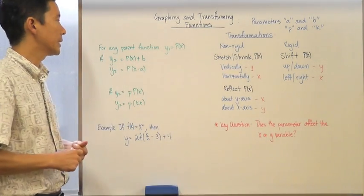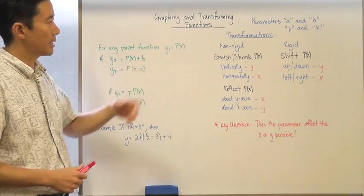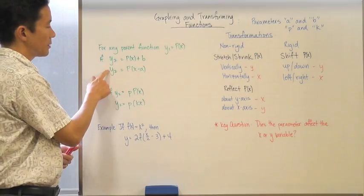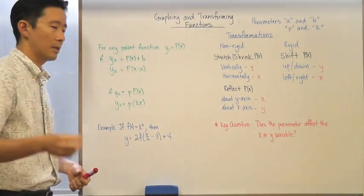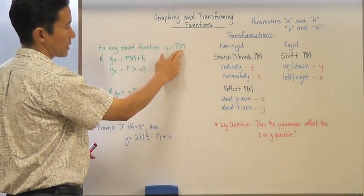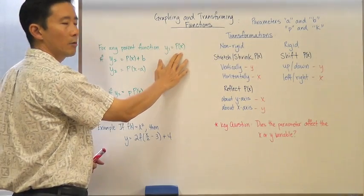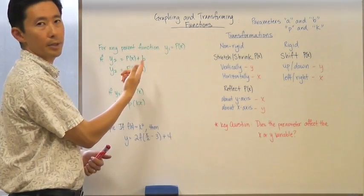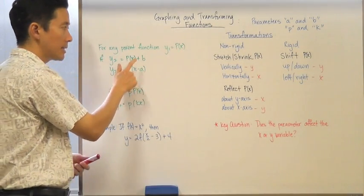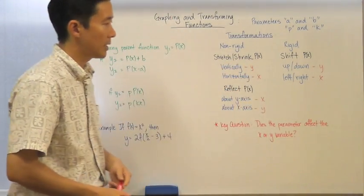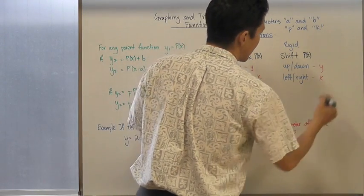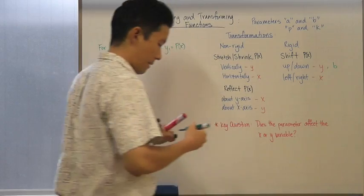Let's be very general about this. Let's say for any parent function, y₁ is the parent function p(x). Now, if y₂ is going to be p(x) plus b, the question is: what is b actually affecting? Well, p(x) represents the y values of your original parent function, and you're just adding b to it. So all you're doing is affecting the y values, which means you're shifting up or down. That's the parameter b.